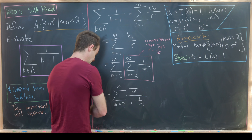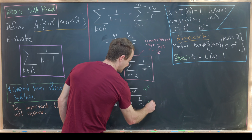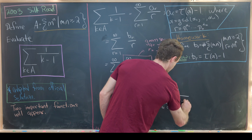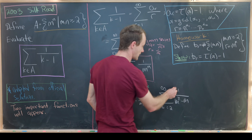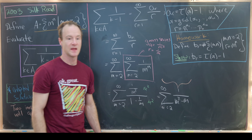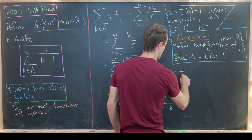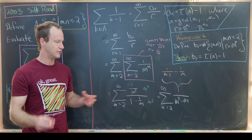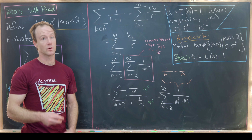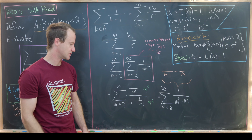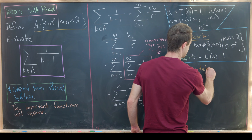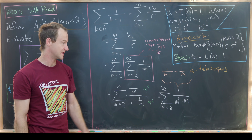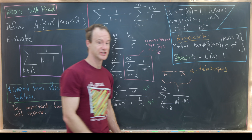Let's do a little algebraic manipulation: multiply numerator and denominator by m squared. That gives us the sum as m goes from 2 up to infinity of 1 over m squared minus m. From there, we do a partial fraction decomposition and write this as 1 over (m minus 1) minus 1 over m, given that the denominator factors as m times (m minus 1). This turns the sum into a telescoping series, which telescopes down to just the number 1.